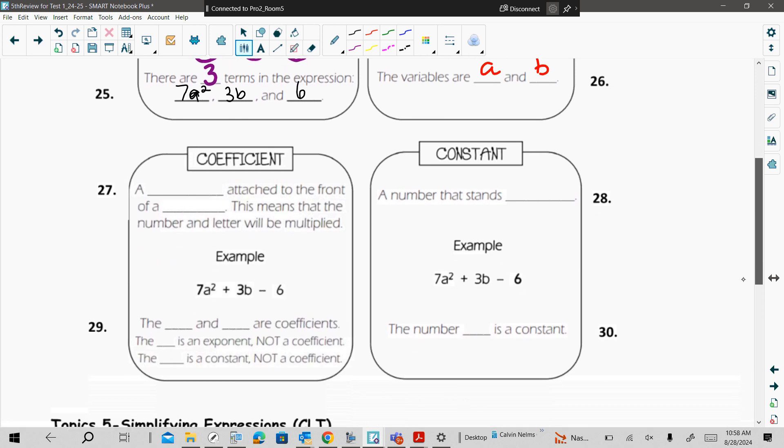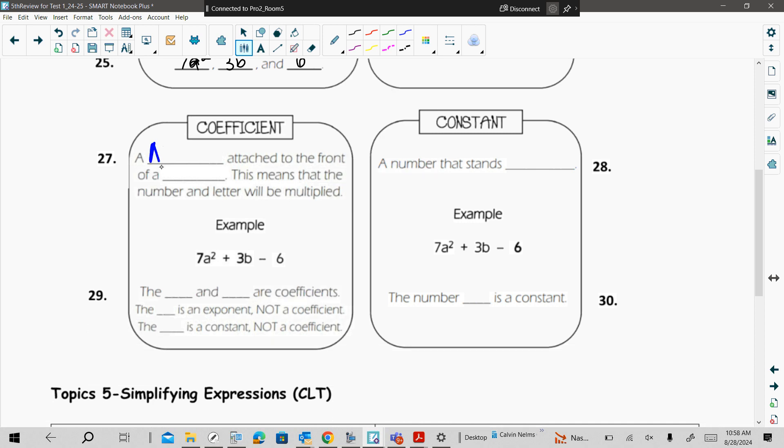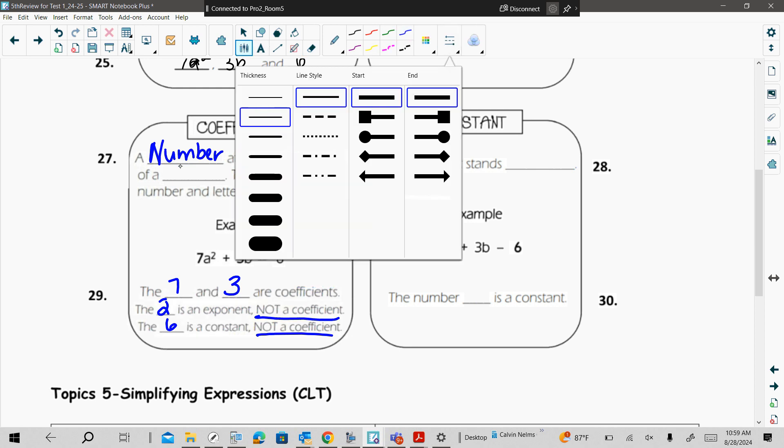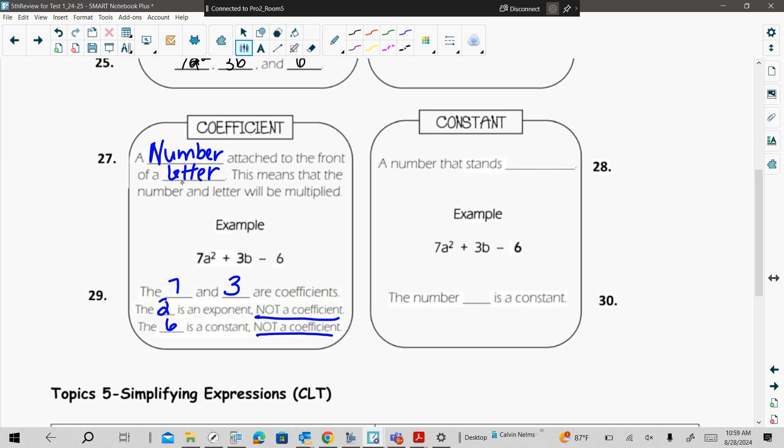All right. Now we're going to go into coefficient. Our coefficient is our number attached to the front of a variable or letter. So it's our number in front of the letter. This means that number and letter will be multiplied. So 7 and 3 are coefficients. The 2 is an exponent, so it's not a coefficient. And the 6 is a constant, so it's not a coefficient. So if you want to think of it as a number in front of a letter instead of a variable to help you simplify it, you can. Coefficients are attached to the letters.